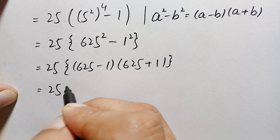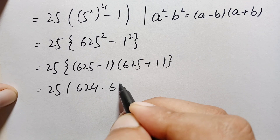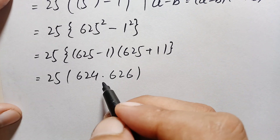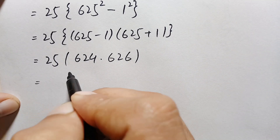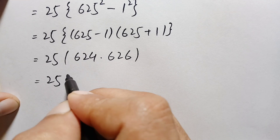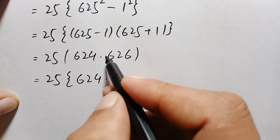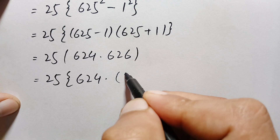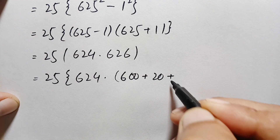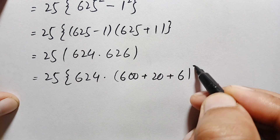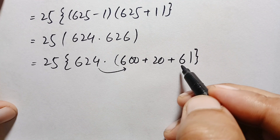Further, this becomes 25 times 624 times 626. We have to multiply these two numbers without any calculator and without any standard multiplication. We write 624 times 626, and break 626 into its place values: 600 plus 20 plus 6. We will multiply 624 first by 600, second by 20, and last by 6.